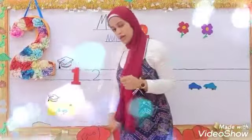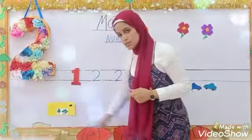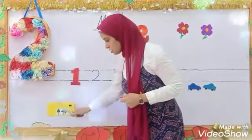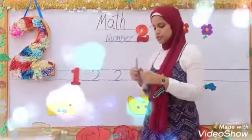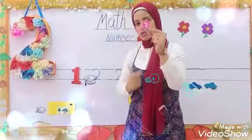Now next picture. Come with me. How many trees? One, two. Two trees. What is number? This is number two.